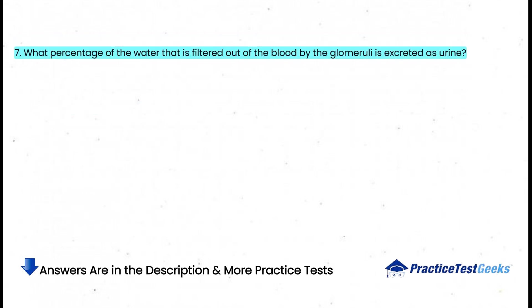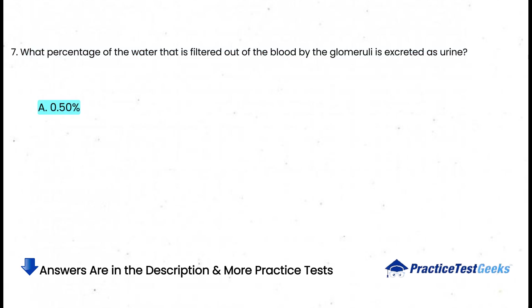What percentage of the water that is filtered out of the blood by the glomeruli is excreted as urine? a. 0.5%, b. 1%, c. 10%, d. 99%.